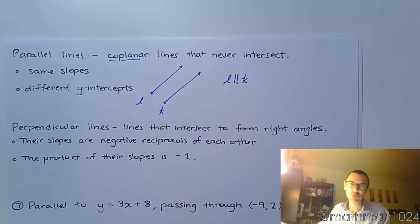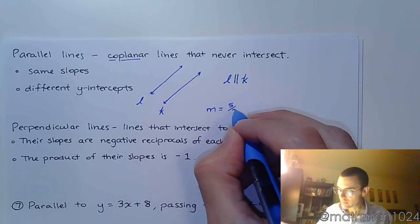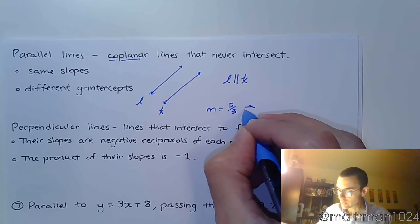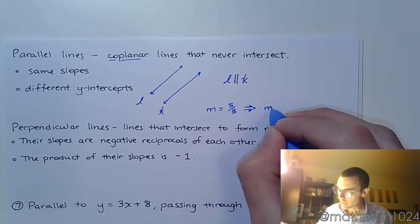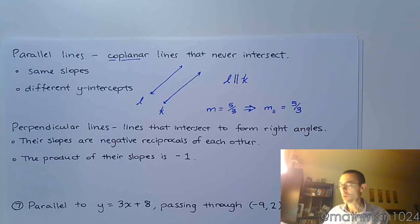Okay, that's pretty much it. So if you have a slope that is equal to 5 thirds, that means that a slope that's parallel to that would also have to be 5 thirds. That's it. Nothing more.